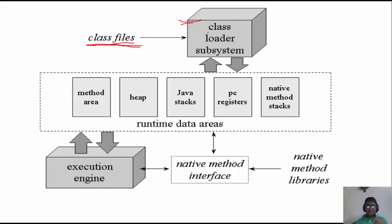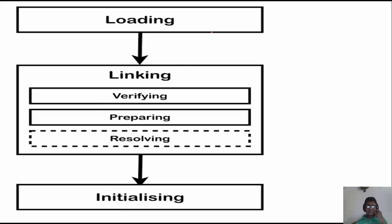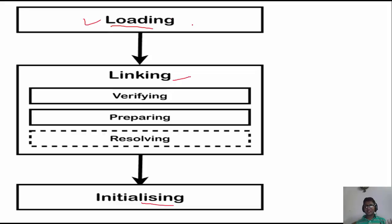There are three internal processing phases in the class loader subsystem. The first phase is loading, the second phase is linking, and the third phase is initializing. The loading phase is where your class files are loaded. Loading involves three different kinds of loaders: the bootstrap loader, the application class loader, and the extension loader.